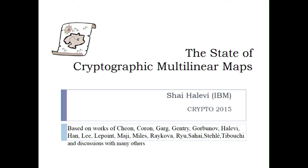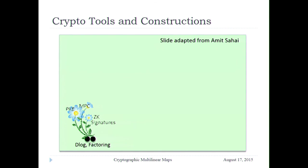Thank you, Rosario, and thank you to the crypto program committee for inviting me. I'm very happy to give a talk here on the state of cryptographic multilinear maps. That's based on works of all of these people listed here on the slides and many other people I talked to over the last couple of months. Let me start with some perspective on the tools and constructions that we have, at least for public encryption.